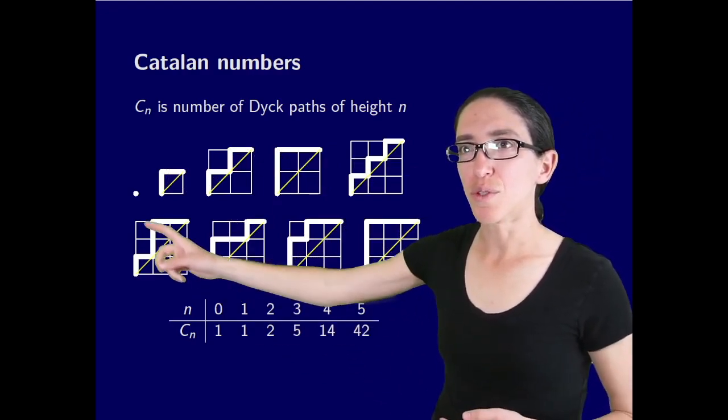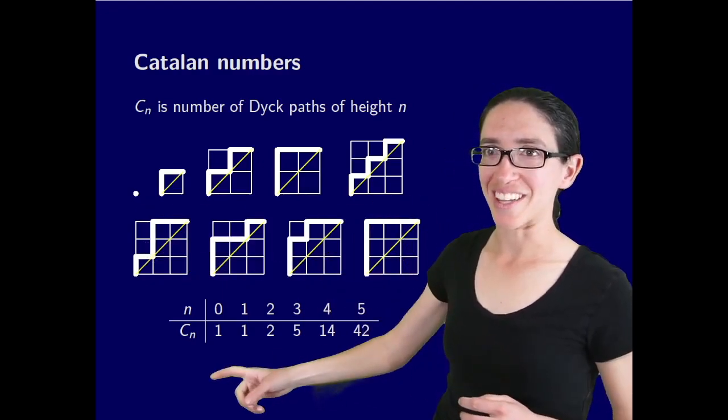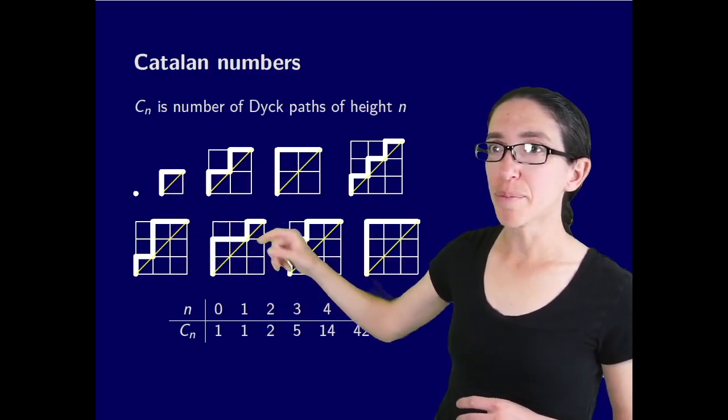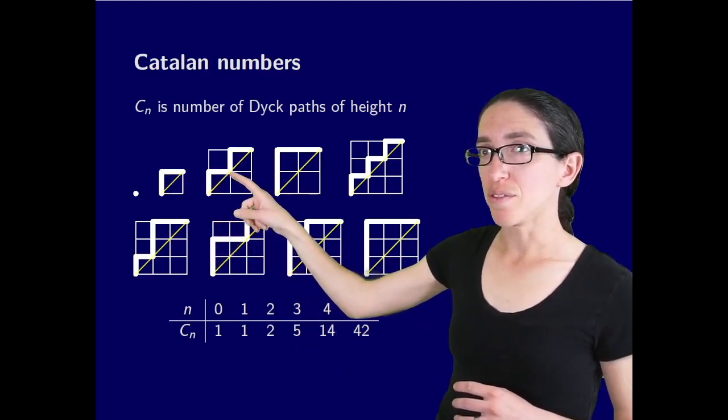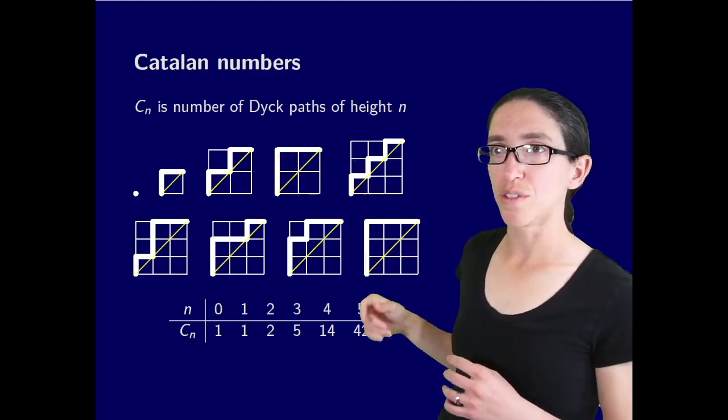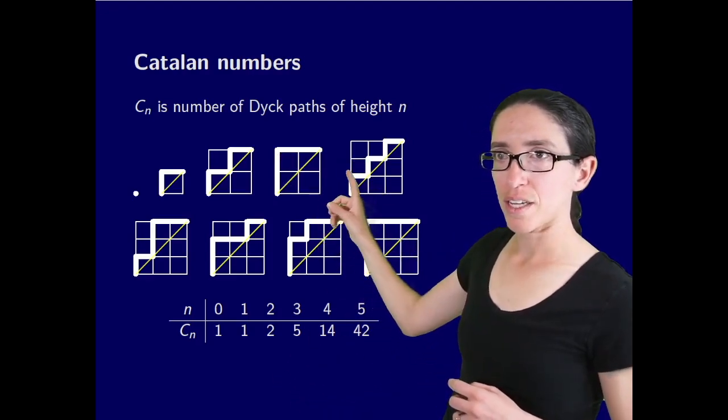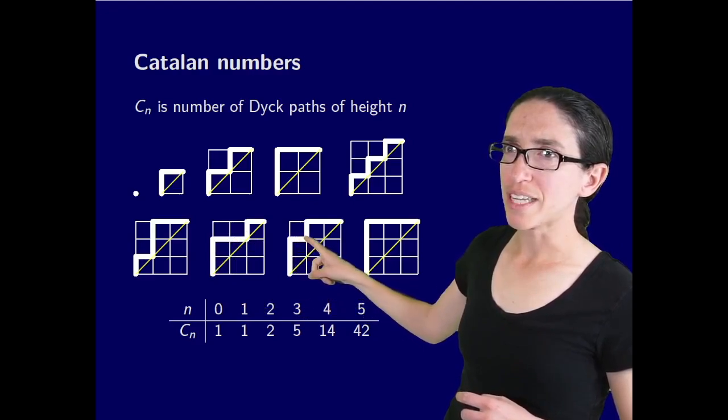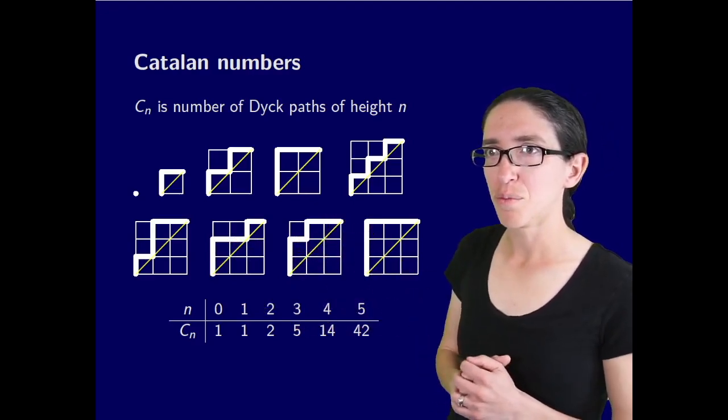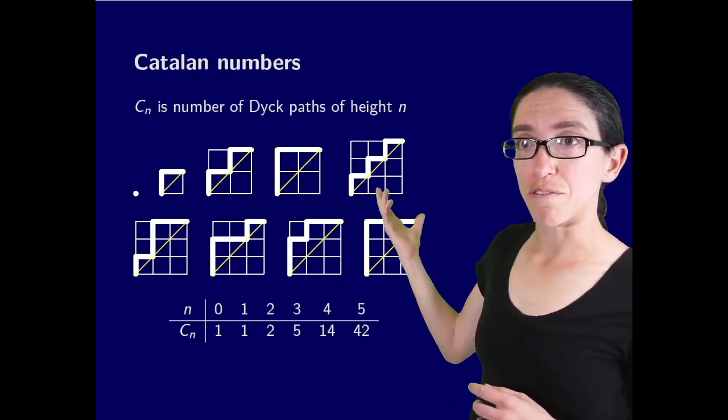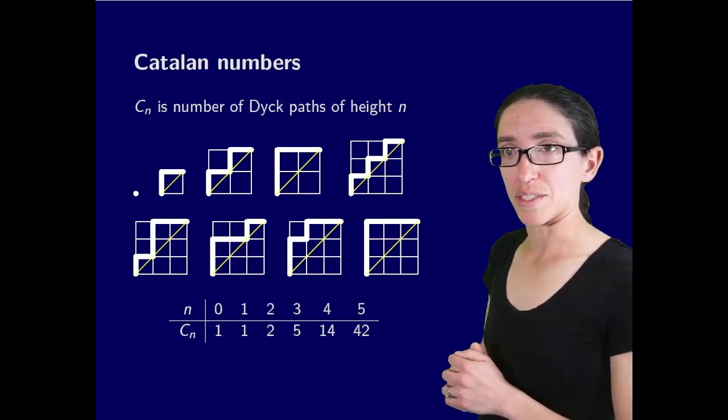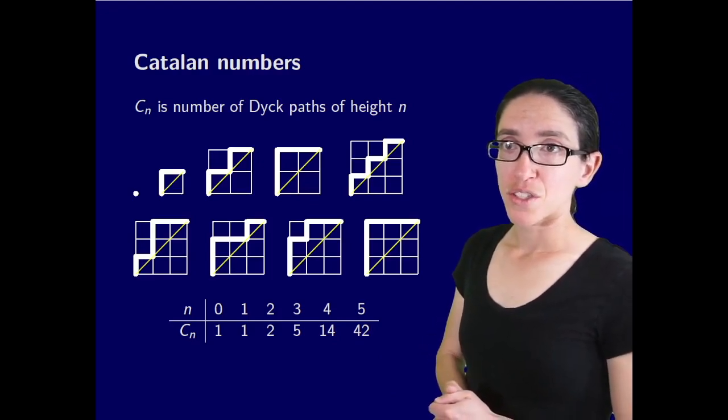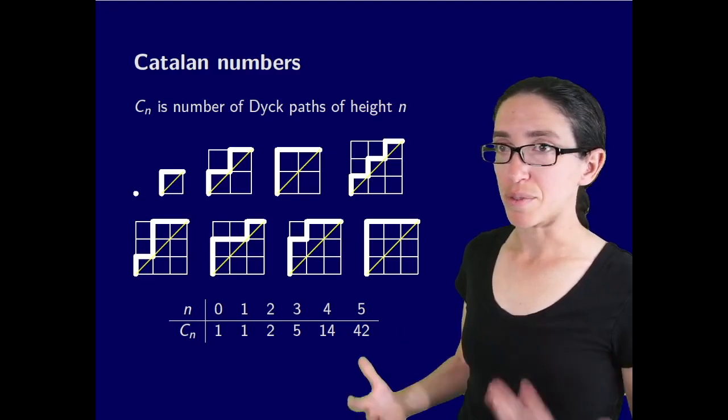Let's look at the first couple cases. If you have a 0 by 0 grid there is one possible path and so the Catalan number C sub 0 is 1. For a 1 by 1 grid you have to stay above the diagonal so there's only one way to do it. For 2 by 2 you can write them out, there are two possibilities and for 3 it already gets quite complicated. When you count those up there are five possibilities, so C sub 3 is 5. After that it gets much more complicated very quickly, 14 and 42 and beyond that it gets into the hundreds. So the Catalan numbers grow very fast and they're a very interesting sequence.